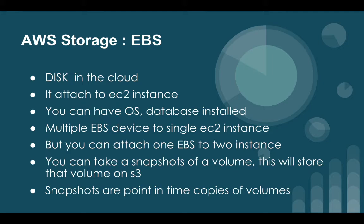You can attach your EBS with your EC2 instance to store your database or OS. Multiple EBS devices can be attached to a single EC2, but you cannot attach one EBS to two different instances. You can take a snapshot of a volume on your EBS — this will be stored in S3. Snapshots are a point-in-time copy of the volume, so it acts as a restore point. If there is any failure, you can go back to your restore point.